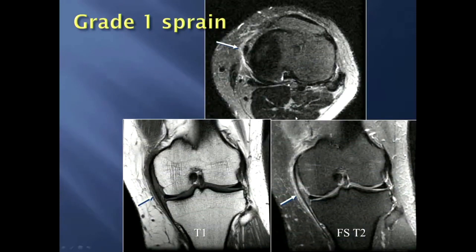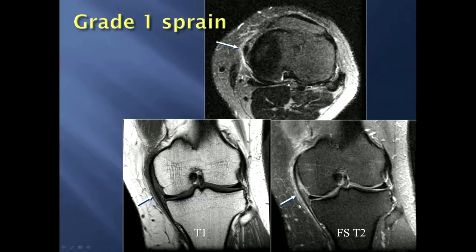On MRI, a grade 1 sprain will have high signal adjacent to the medial collateral ligament. On a T1-weighted image, you have intermediate gray signal adjacent to the MCL, which is bright on the T2-weighted images. Notice that the MCL collagen fibers themselves look intact macroscopically, because this is a sprained ligament with only microscopic injury to some collagen fibers.